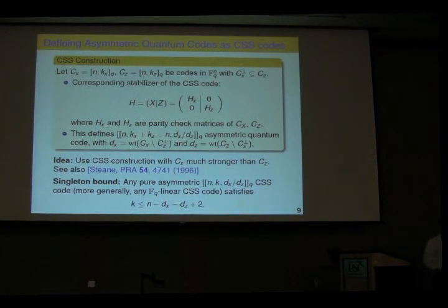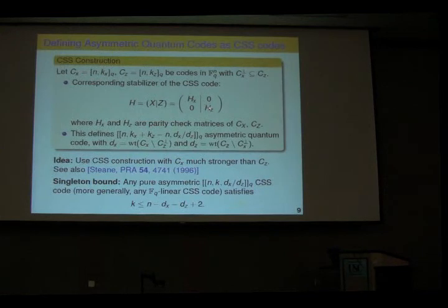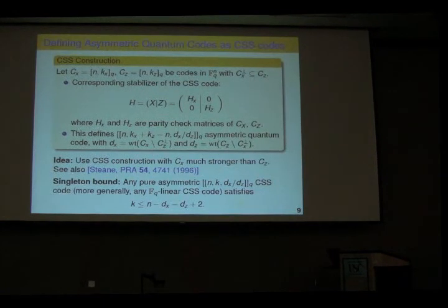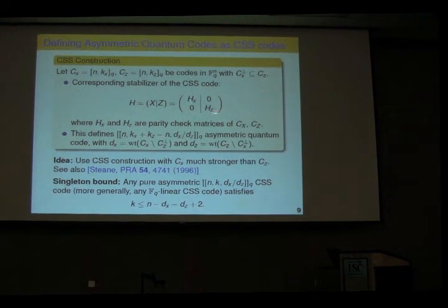We found it most natural to work with CSS codes to get an imbalance. In the CSS construction you get a bunch of X-only generators and Z-only generators. The X-only generators correspond to a parity check matrix of a classical code, and the Z generators also come from a classical code. The natural idea is to make the X code much, much more powerful than the Z code — that gives you many more X generators, enabling you to correct many more Z errors.